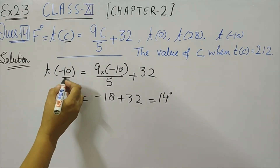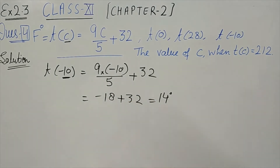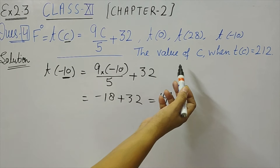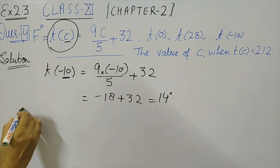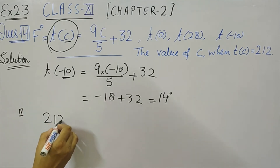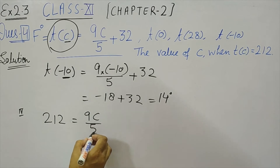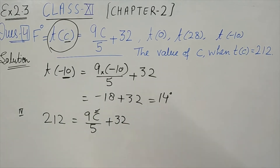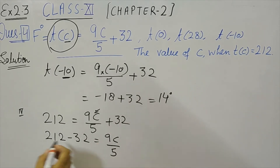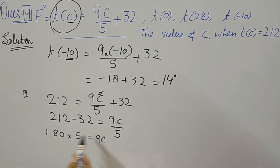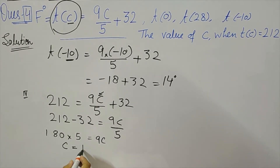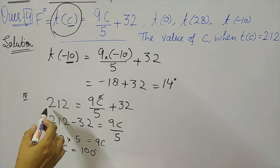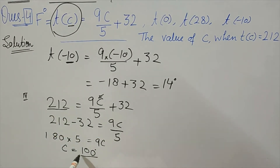So if the Celsius temperature is −10, then the Fahrenheit temperature is 14 degrees. For the last part, we find the value of C when t(C) = 212. So 212 = 9C/5 + 32. Subtracting 32: 180 = 9C/5. Multiplying both sides by 5 and dividing by 9, we get C = 100 degrees. When the temperature is 212°F, it is 100°C.